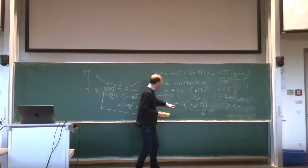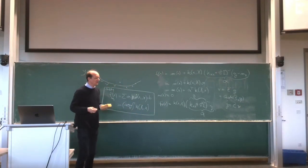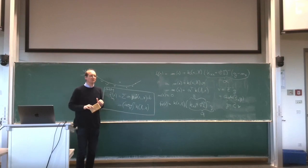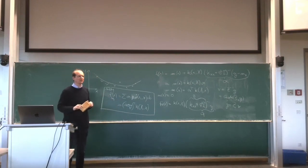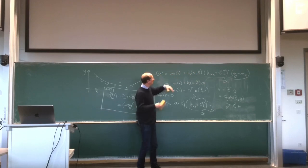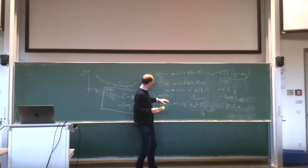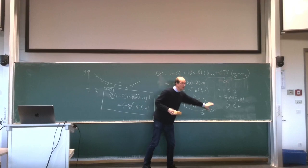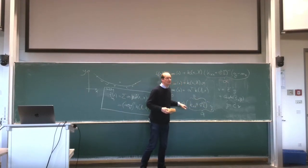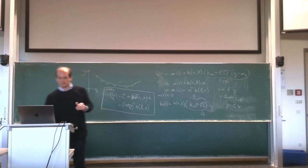In Gaussian processes everything looks super theoretical and you get lost in equations. However, the expressions are always the same Gaussian distribution mechanics, just written in a general form for functions. The mechanism is the same as for the multivariate Gaussian distribution. With assumptions like the mean function equal to zero, you get something quite simple — that's the solution you typically see in textbooks and blogs on GPs.